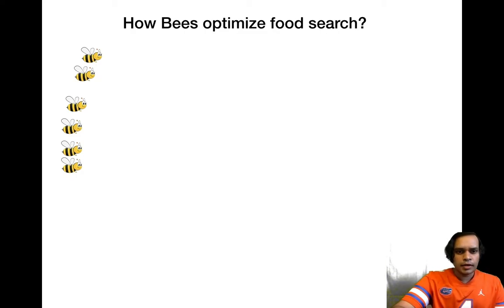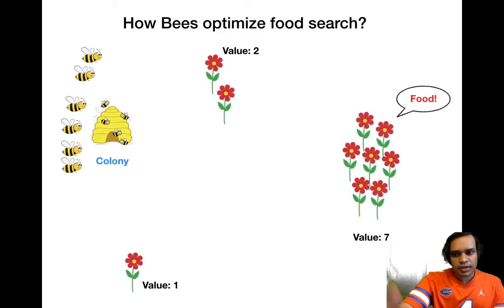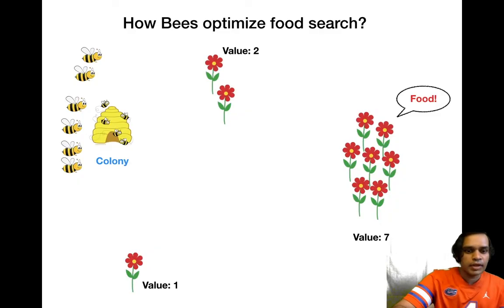Now that we want to learn from the bees how they do an optimal search for food, let's see the steps. Here you have a couple of bees on the screen, they live in a colony, and you have a couple of food sources. The value of the food sources reflects how much food is available - a value of seven indicates seven flowers from which you can extract food.